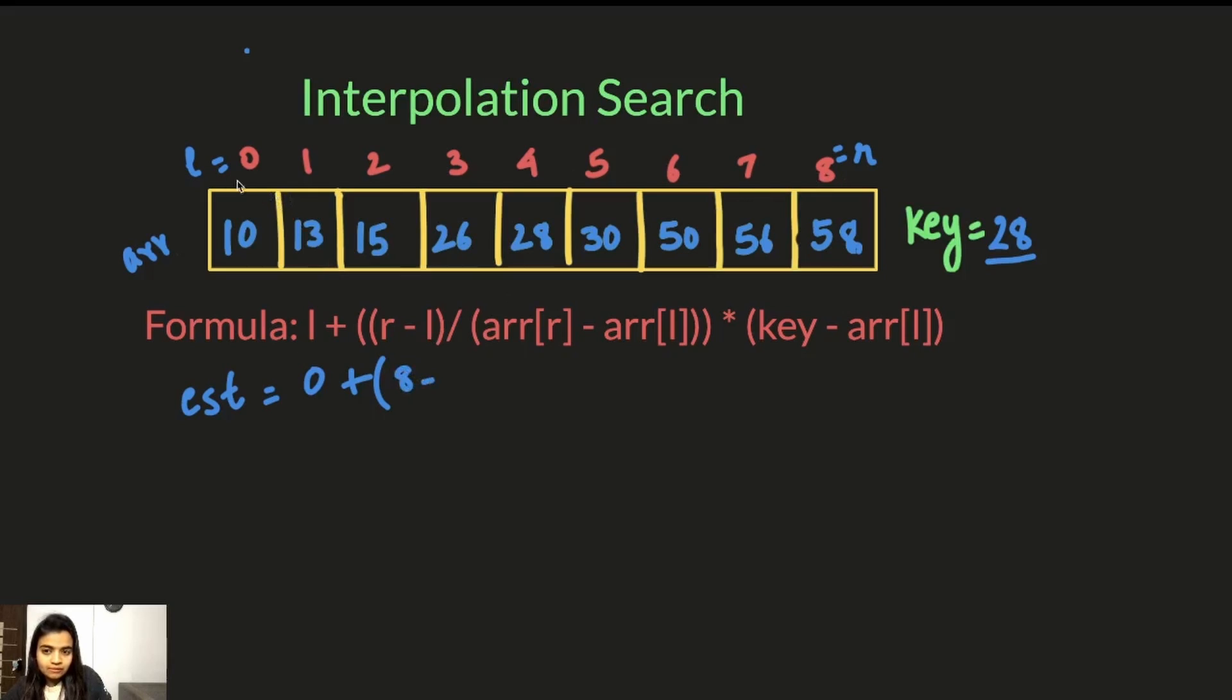8 minus 0, L is 0 divided by ARR of R which is ARR of 8, 58, minus ARR of L which is 10. This entire thing will be in our bracket into key which is 28 minus array of L which is left which is 10.